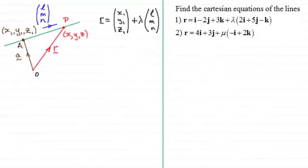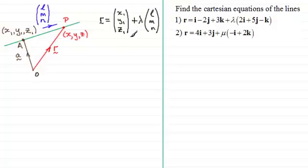Hi there. In this video I want to show you how we derive the Cartesian equation for a line in three dimensions. The best way to do this is by looking at the vector parametric form for the equation of a line, which I'm assuming you're familiar with.